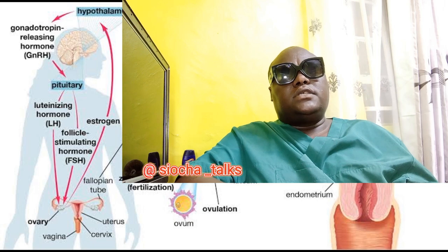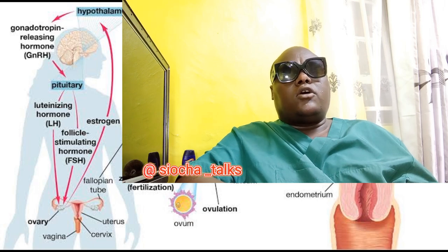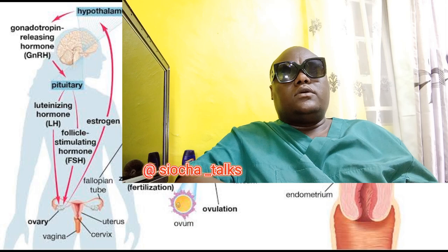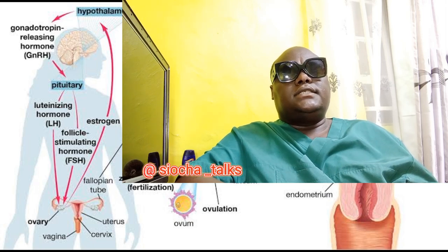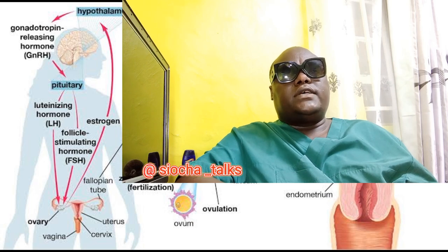The process of ovulation is regulated by a complex interplay of hormones, including estrogen, luteinizing hormone (LH), and follicle stimulating hormone (FSH).